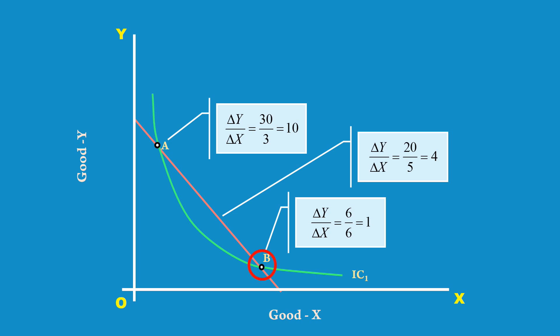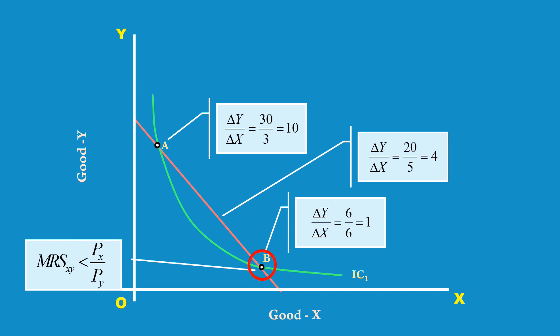We shall start from point B now. At point B, the marginal rate of substitution of X for Y is 1, and the price ratio is 4. Marginal rate of substitution is less than the price ratio, so the consumer cannot be in equilibrium. He substitutes good Y for good X and moves up, reaching point C where IC2 is tangent to the price line. In this tutorial, my aim is to clarify the doubts about marginal rate of substitution of X for Y and the price ratio. To know more about consumer equilibrium, view my tutorial on consumer's equilibrium in terms of indifference curve analysis. The link is given in the description.